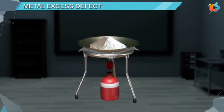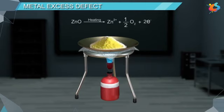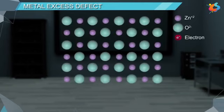Example: zinc oxide is white or colorless solid at room temperature, but when zinc oxide is heated it loses oxygen and turns yellow. ZnO gives Zn2+ plus 1/2 O2 plus 2 e- on heating. The excess Zn2+ ion gets trapped into the interstitial sites and the released electrons get trapped in its neighboring interstitial sites and maintain the electrical neutrality.